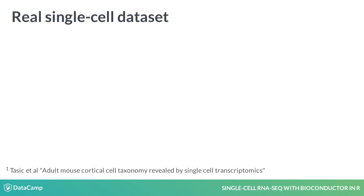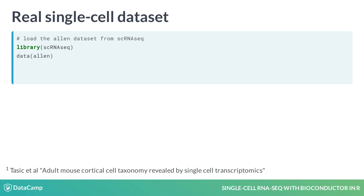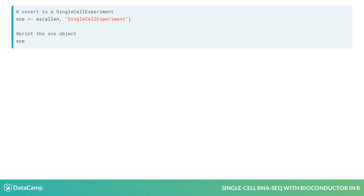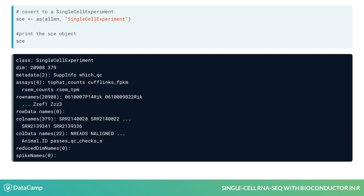So we've created a fake data set, but now let's look at a real data set. We can load the Allen data set from the package scRNAseq using the data function. The data set is a subset of the data published by Tasek et al. in 2016. It contains about 400 cells from the visual cortex in male mice, where cells were extracted from different layers of neurons. The data set Allen is a SummarizedExperiment object, so as in the previous slide, we can create a SingleCellExperiment object from the object Allen using the as function with the argument SingleCellExperiment. In the SCE object, you can see the gene and cell names, and we also have access to cell quality measures — for example, the total number of reads aligned for each cell in the colSums and alignment columns of the colData data frame.